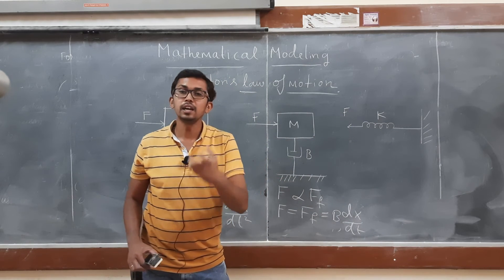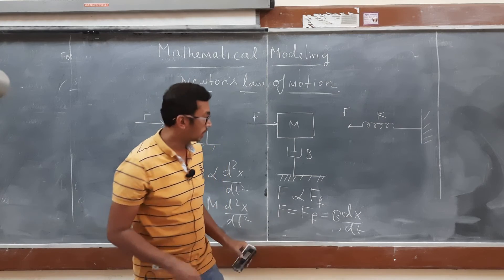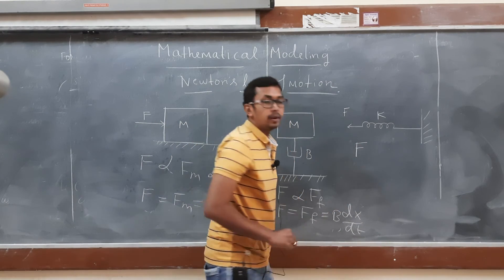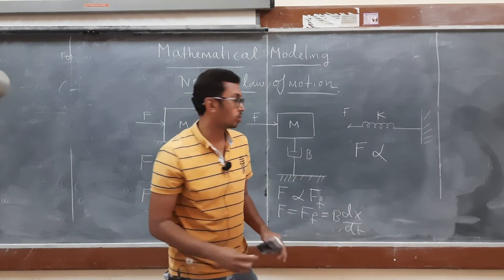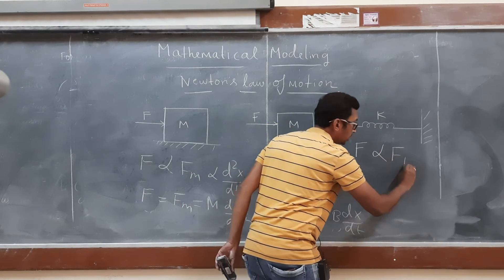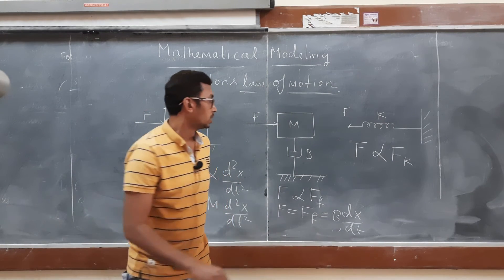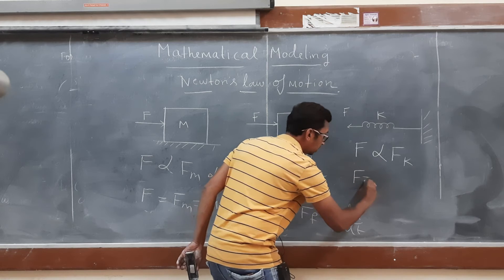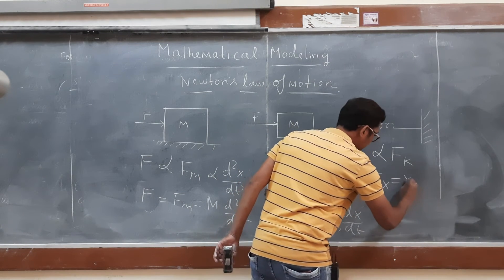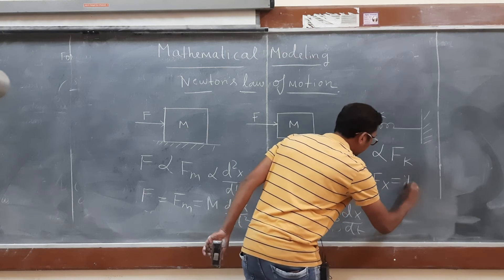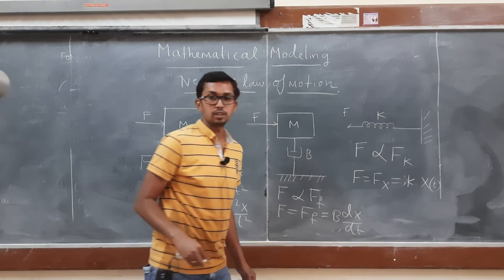Now let us consider a spring with negligible mass and negligible friction. As per Newton's law, the applied force is proportional to the opposing force F_k. Therefore we can write: F = F_k = K · x, where x represents the displacement. So the spring force is proportional to displacement.